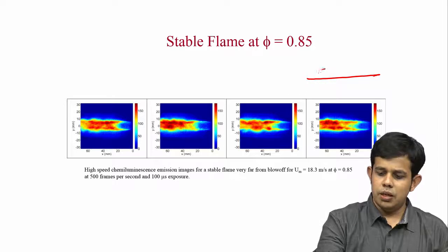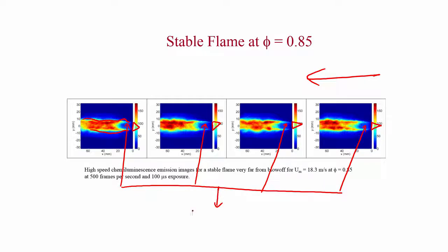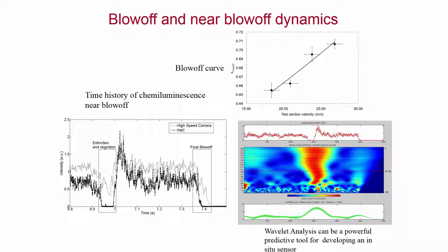How does the stable flame look? The flow is from left to right. In a stable flame you see that the recirculation zone is present, the flame holder is visible, and the flame emerges from the shear layers. There is no chemiluminescence from the recirculation zone — this is the characteristic of a stable flame. When blow-off dynamics are present, the blow-off curve shows phi at blow-off as a function of test section velocity, and near blow-off you see extinction and re-ignition patterns in the images.